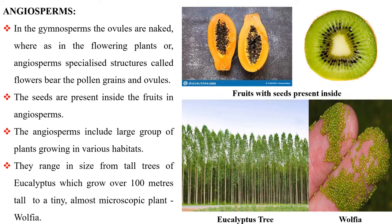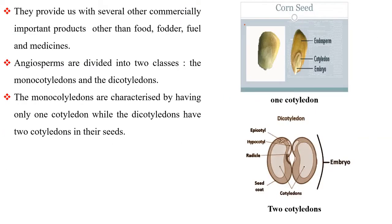In the gymnosperms, the ovules are naked whereas in the flowering plants or angiosperms, specialized structures called flowers bear the pollen grains and ovules. The seeds are present inside the fruits in angiosperms. The angiosperms include a large group of plants growing in various habitats. They range in size from tall trees of eucalyptus which grow over 100 meters tall to a tiny, almost microscopic plant, Wolffia. They provide us with several other commercially important products other than fodder, food, fuel and medicines.